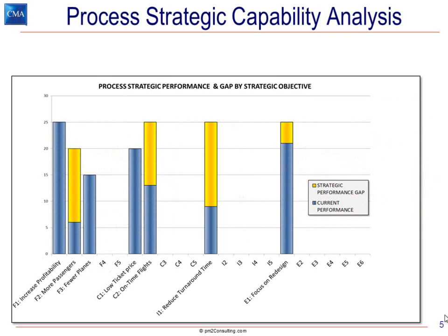So if we take a look at the overall evaluation, we see a couple of things. We're concerned about the relative size of the gold gap. When we come to the next section and we're looking for opportunities to invest in process improvement, we're probably better off investing in this strategic objective — I-1, reduced turnaround time — because it has a significant gap compared to E-1, focusing on redesign. So it allows us to get aligned about where we invest.